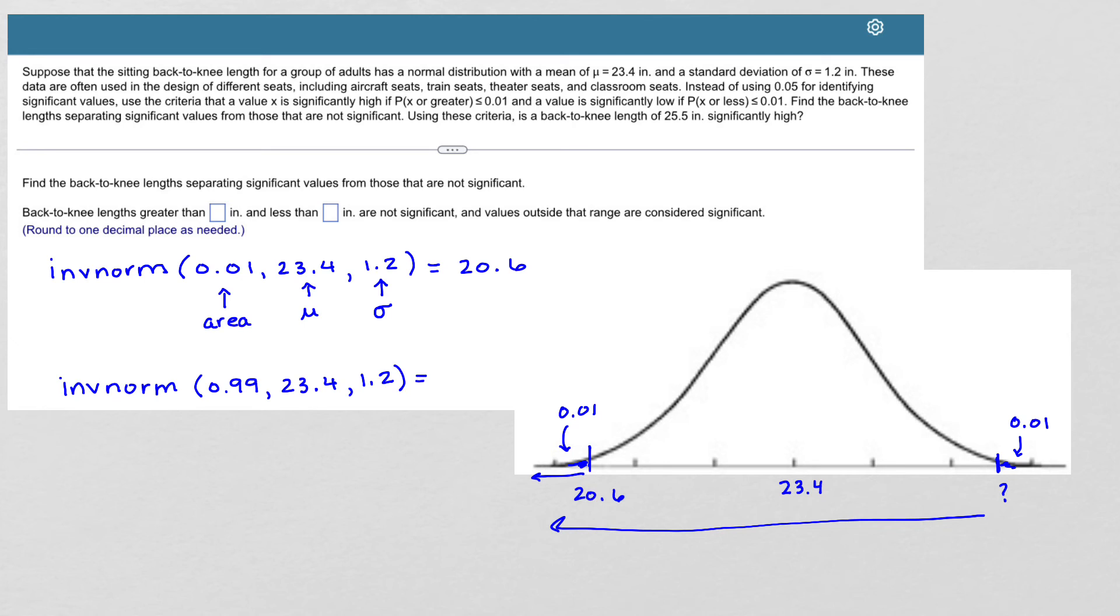And then I put in the mean and the standard deviation. Now, some calculators will let you say left, right, or center, and so you could have done 1% on the right. So if you have that feature, that's fine to do. But if not, most calculators still don't have that feature, and so you would do 99% on the left, which is the same as having 1% on the right. So this turns out to be 26.2.